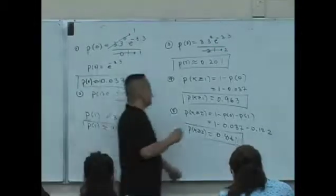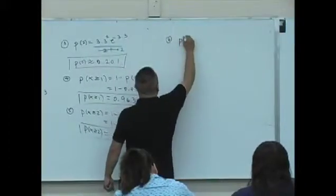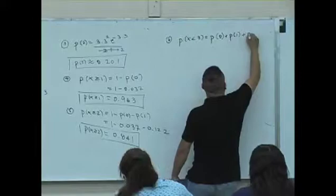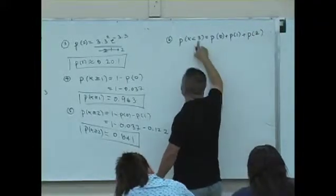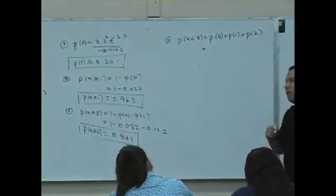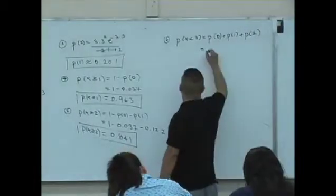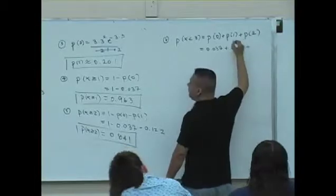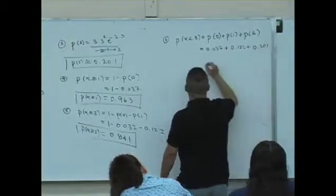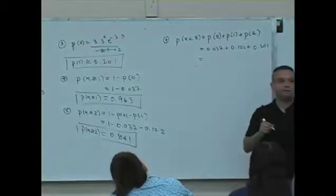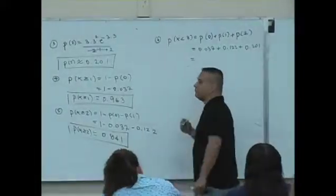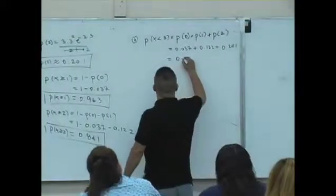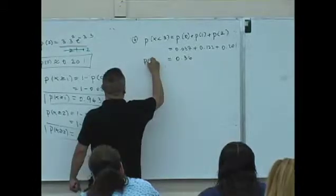So finally now, the probability of less than 3 is P(0) plus P(1) plus P(2). Isn't that less than 3? So what's P(0)? 0.037 plus P(1), 0.122, plus P(2), which is 0.201. And what's your final answer? 0.36. Probability of less than 3.